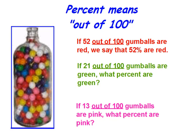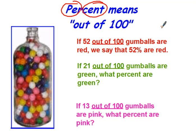Percent means a number out of 100. Per means out of, and cent means 100. If 52 out of 100 gumballs are red, we say that 52% are red.